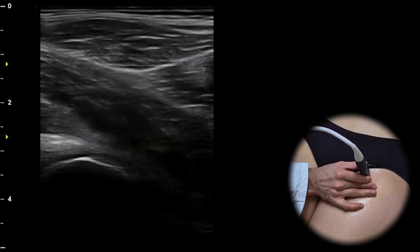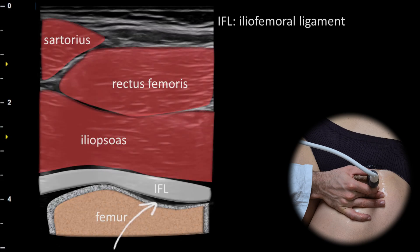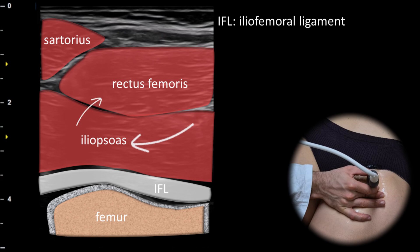As we slide distally following the femoral neck we can assess the space between the femoral neck and the iliofemoral ligament, an area where joint fluid may accumulate. It is important not to confuse anisotropy of the iliofemoral ligament with fluid. A heel-toe maneuver with the probe should be performed to ensure the iliofemoral ligament is parallel to the probe. Superficially we can evaluate the iliopsoas muscle, the rectus femoris muscle, and the sartorius muscle.